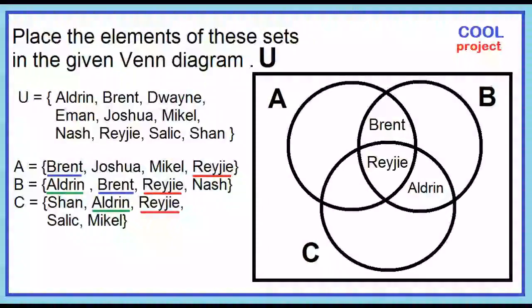What are the elements common to A and C? Michael and Reggie. Since we already have Reggie, place Michael in the area where A and C overlap.